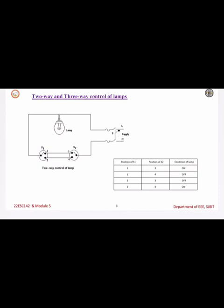Before going to two-way and three-way lamp control, domestic lighting circuits are quite simple and usually controlled from one point. In certain cases, we require to control lamps using two-way or three-way control. Before going to the two-way lamp, let us see the simple switch circuit and how it works in day-to-day life.